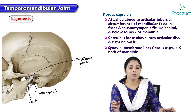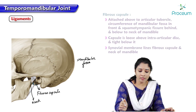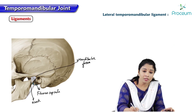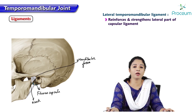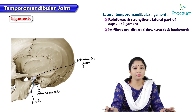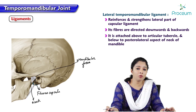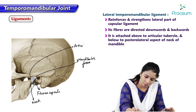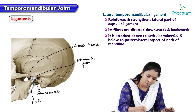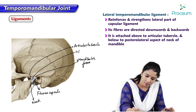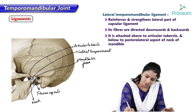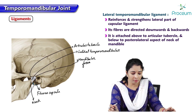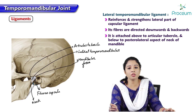The synovial membrane lines the fibrous capsule and the neck of the mandible. The temporomandibular ligament reinforces and strengthens the lateral part of the capsular ligament. Its fibers are directed downwards and backwards, attached above to the articular tubercle and below to the posterolateral aspect of the neck of the mandible. This is the lateral temporomandibular ligament.